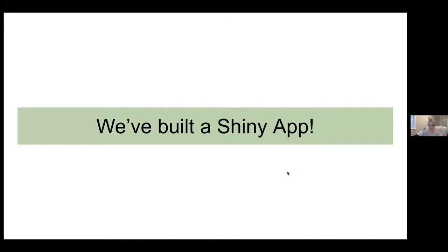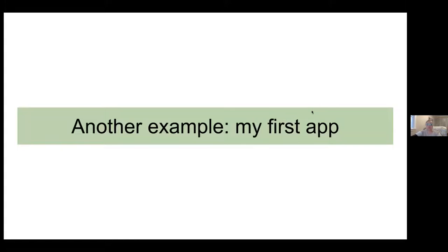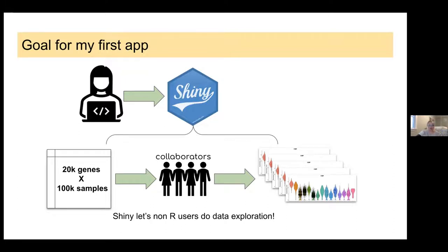Now congrats — we've built a Shiny app. It's really that easy, and now you can at least make a slider bar and put in a histogram. I'd like to walk you through an example of how I built my first real app. The goal for my first app was to pull myself out of that loop so I can let my non-R-using collaborators explore the data that they're interested in on their own. The first thing you have to do to save your app for sharing is make a new directory and put everything that your app is going to need in that directory.